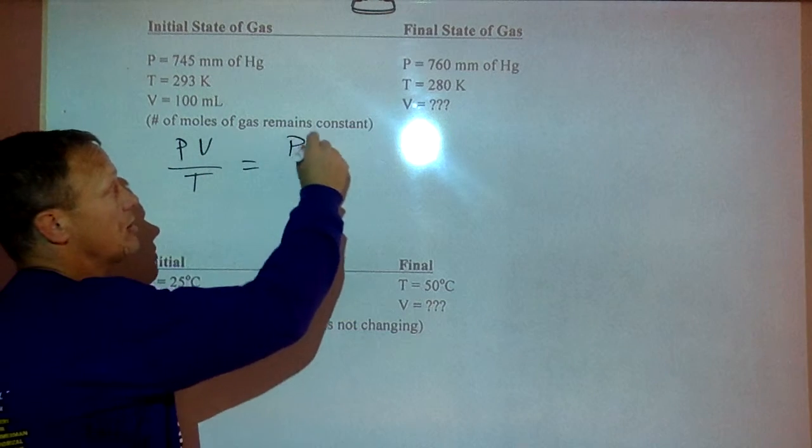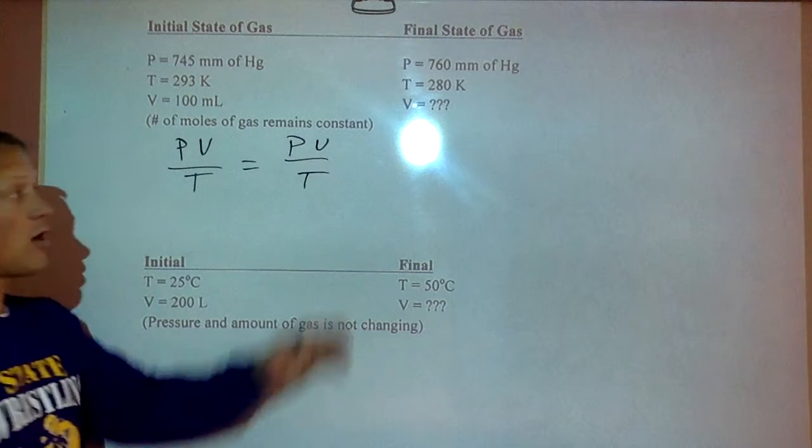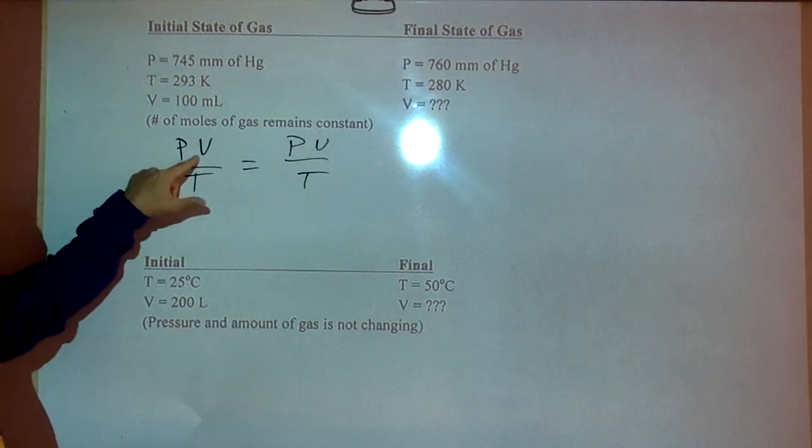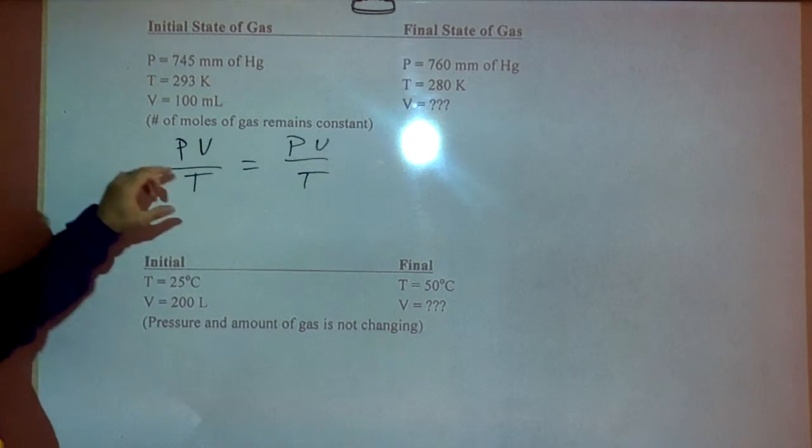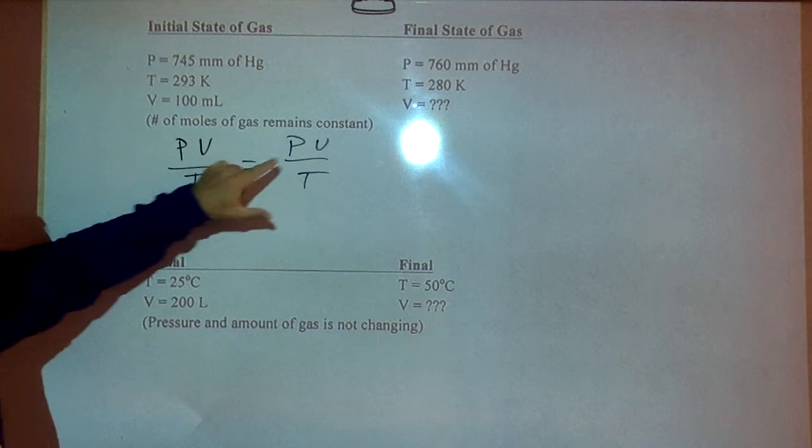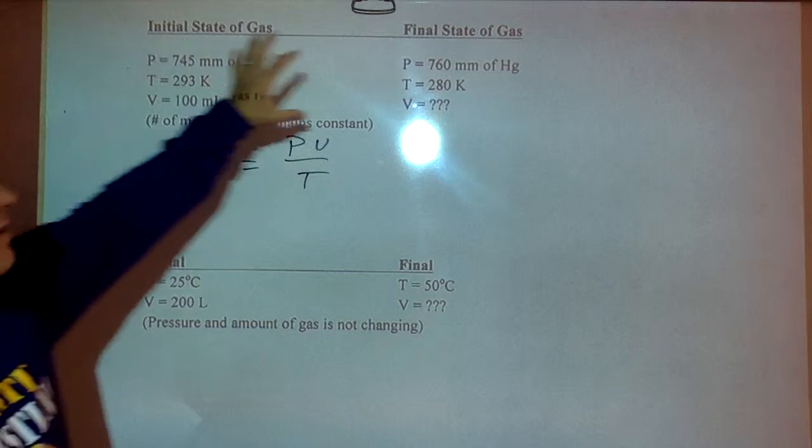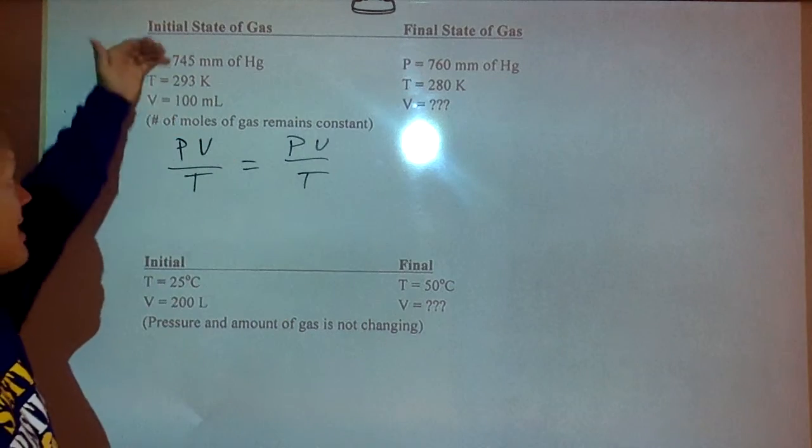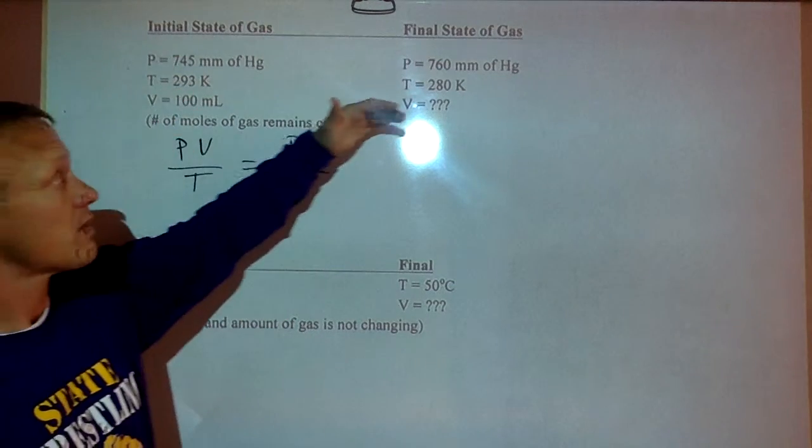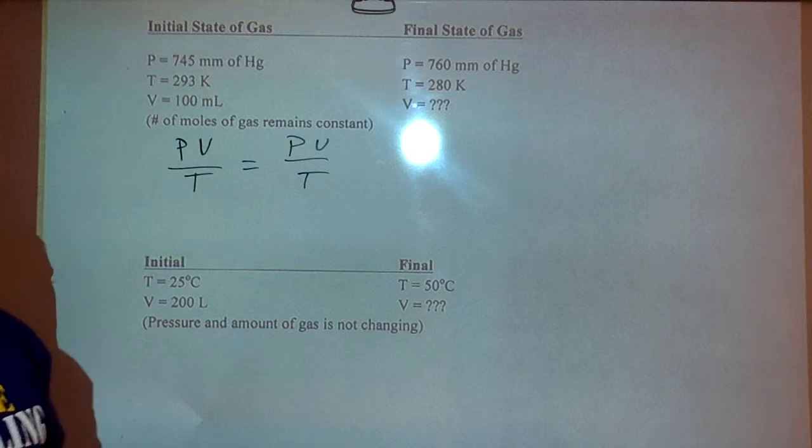If we change some things, what is the new state? If I change the pressure and volume, what does the temperature have to be? If I change this pressure and temperature, what's the new volume? I call these initial state and final state problems. You're starting with the gas at these conditions. Now we change a couple things. Now what's going to happen?